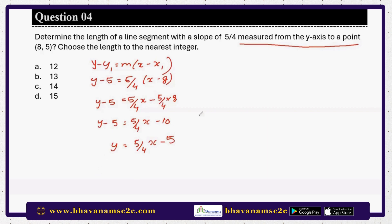The question says measured from the y-axis. When the point is getting measured from the y-axis, the x coordinate on the y-axis is always 0. The coordinate is 0 comma something, because it is the y-axis. When you substitute x as 0, you will get y as minus 5. So the point is 0 comma minus 5. I already have a point: 8 comma 5.